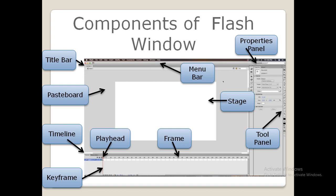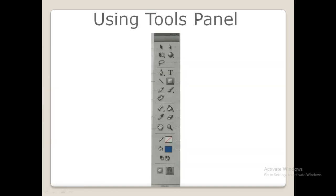Changes to object or document attributes can be done from the properties panel. The tools panel is one of the main components of Flash software. Using these tools you can create shapes, fill color, select and move shapes or graphics, and so on. It allows you to draw, color, and modify an object.